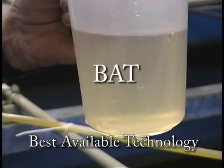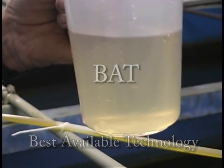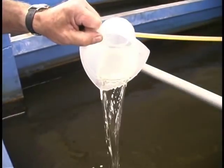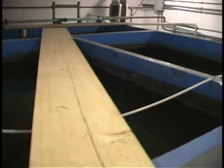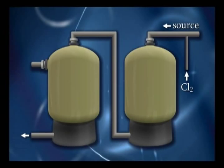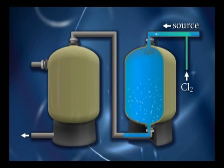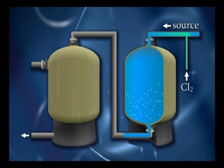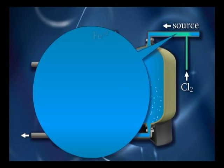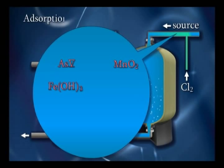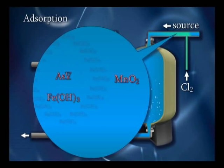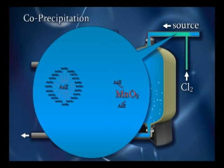For the arsenic rule, EPA evaluated several technologies as candidates for best available technology (BAT) for arsenic removal, including conventional iron and manganese removal. During this process, iron and manganese are oxidized to form insoluble precipitates that are subsequently filtered out. If arsenic is present, it is removed either by adsorption or co-precipitation. In this pressure tank system, oxidation converts iron to insoluble iron hydroxide and arsenic-3 to arsenic-5, which is then attached to iron oxides and removed by filtration.